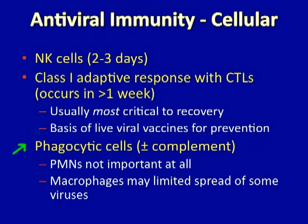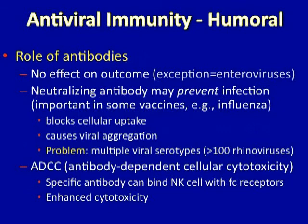Phagocytic cells are much less important in the control of viral infections, whether or not complement is present. Neutrophils have little or no effect on the control of viruses, and macrophages have minimal effect on controlling the spread of viruses. Humoral immunity also doesn't have much of an impact on virus infections, particularly once the infection has been acquired and is in full swing. The one exception is enterovirus infections, which can become chronic and persistent in the absence of antibody production, so individuals with immune deficiency who are unable to make antibodies can have chronic enterovirus infections.